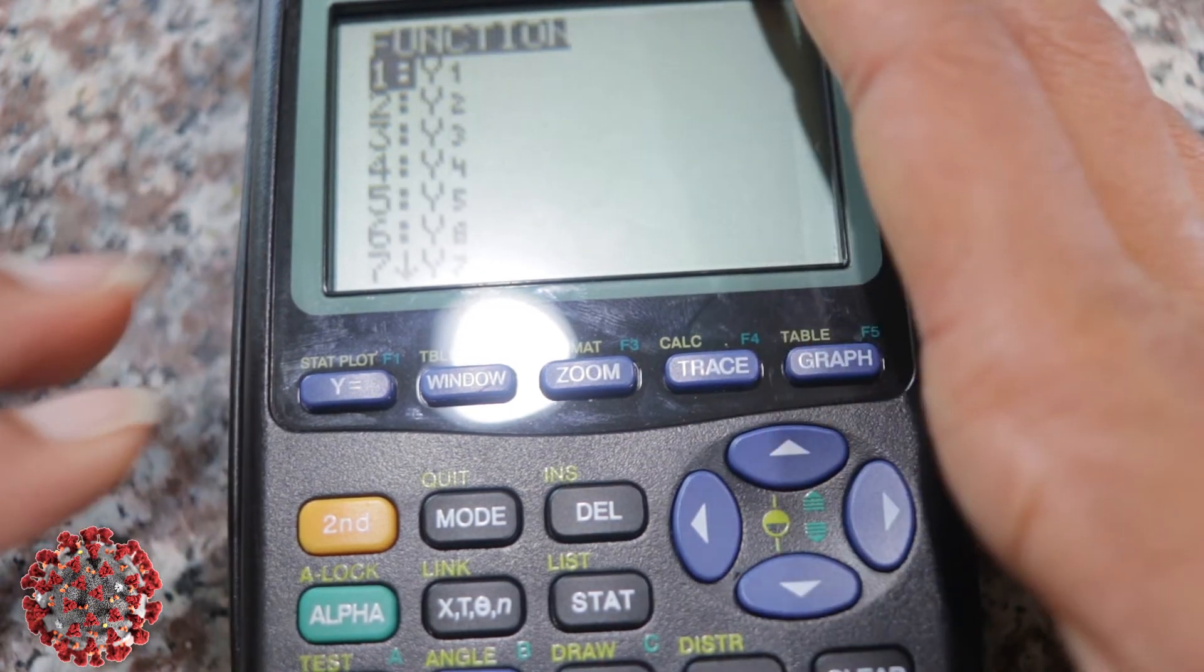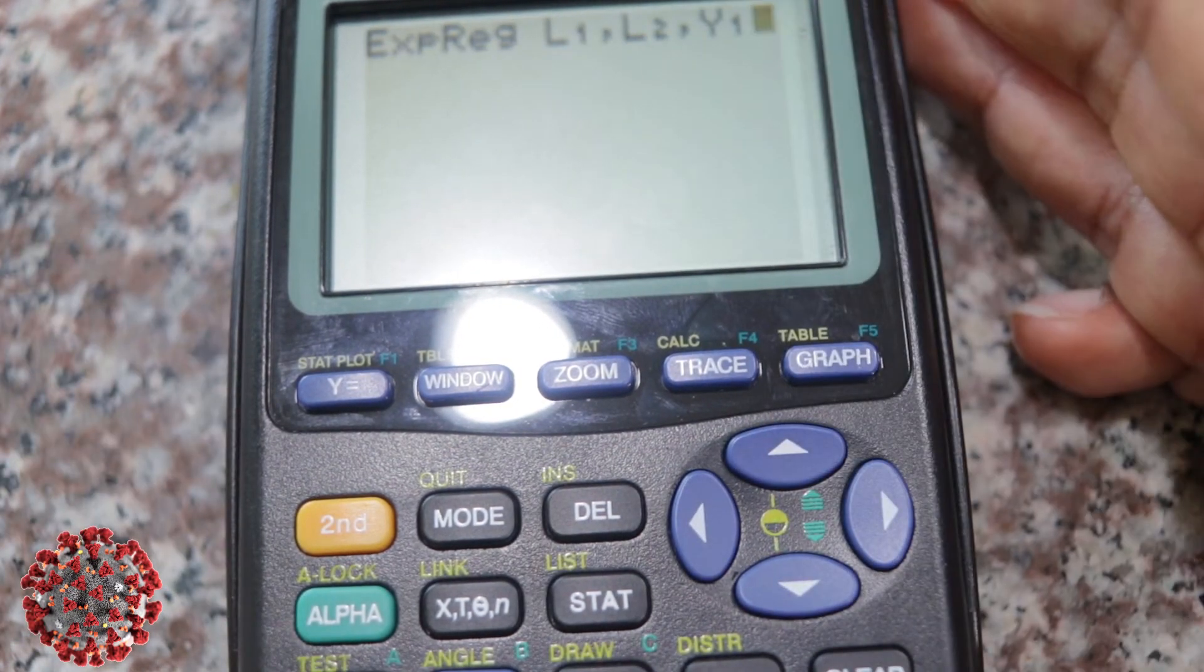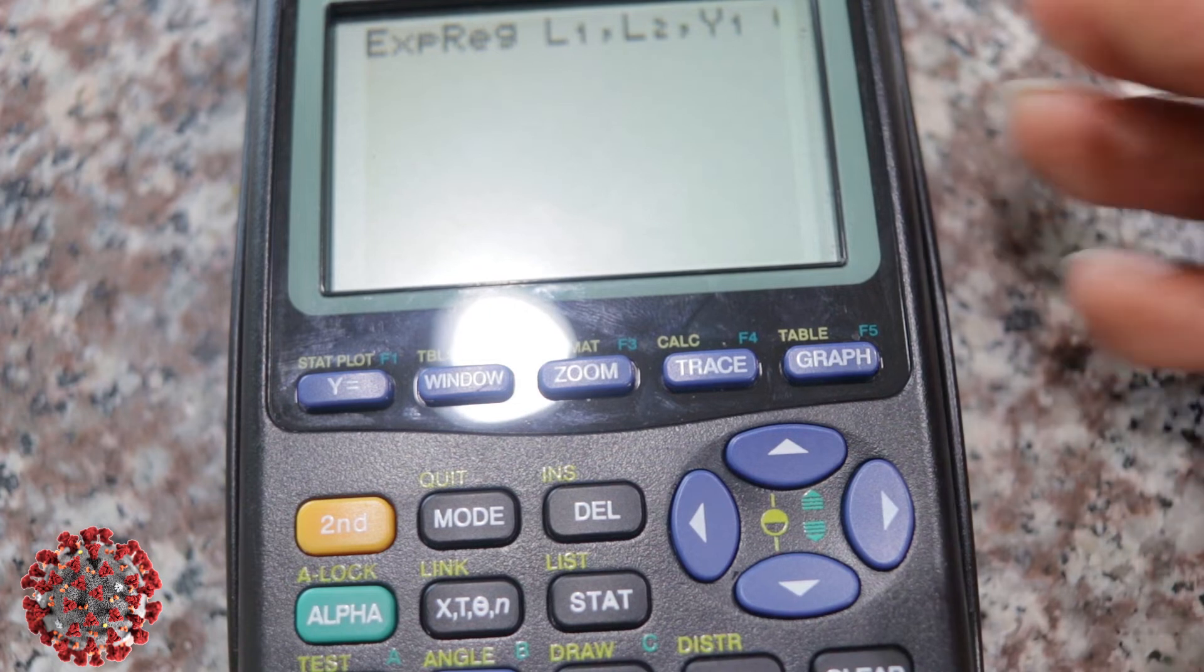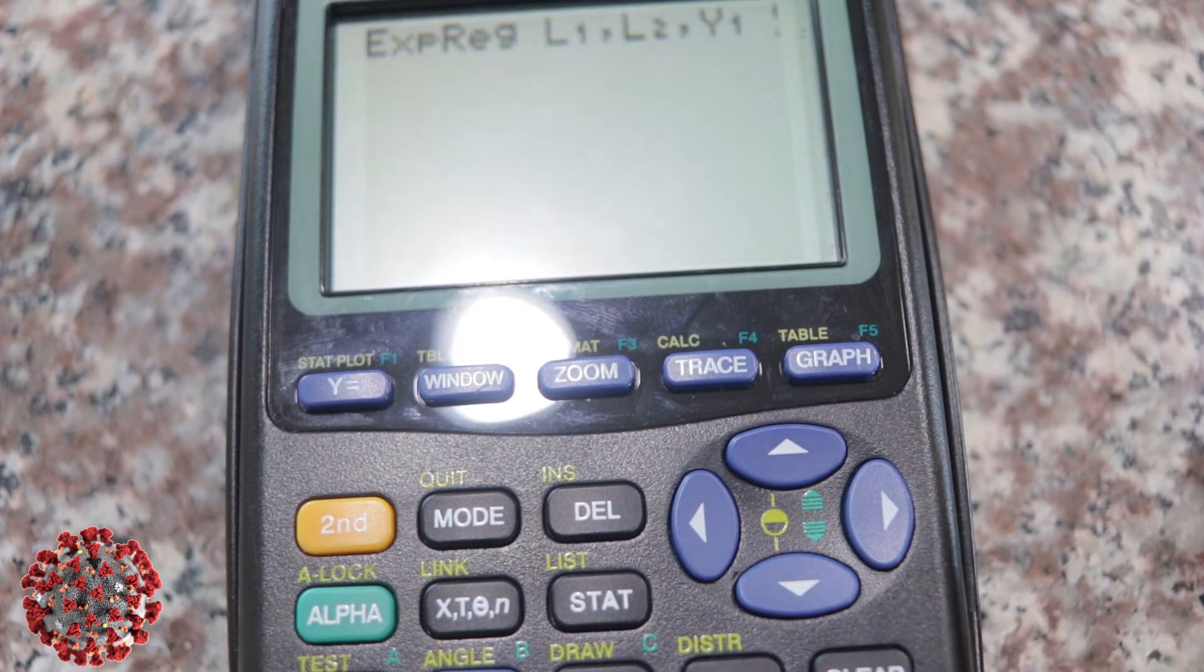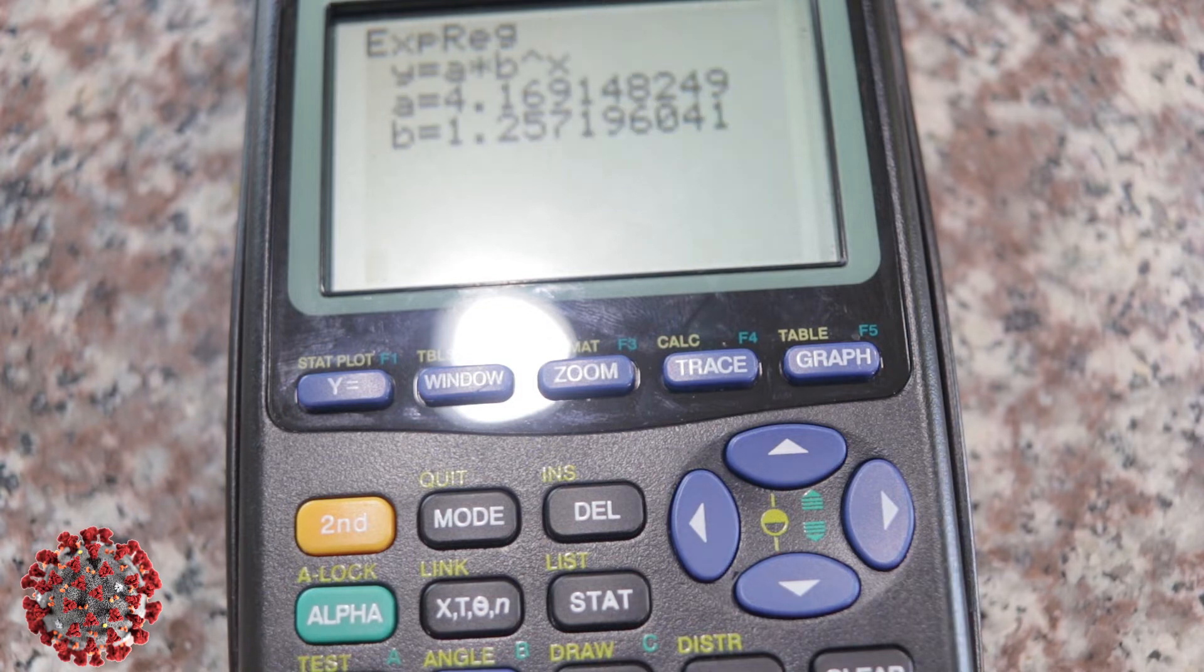And then, oh, I have an extra comma in there. I'm just going to scroll over and delete it. I'm going to put another comma, and then I'm going to go to this time where it says VARS. And I'm going to scroll over to Y-VARS. I'm going to go number one, FUNCTION, and then I'm going to go Y1. So that's defining the function, and I'm going to hit ENTER. And when I hit ENTER, it's going to give me the numbers that go into the exponential function to model this graph.